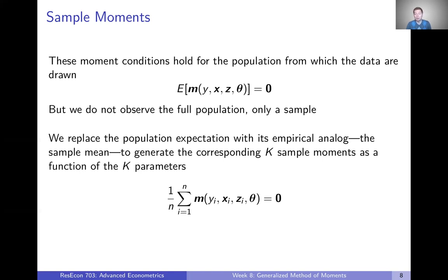We just replace that population expectation with the sample mean. And now we're going to still have k-moments. They're just based on the sample of data that we observe as opposed to thinking about the full population of data from which our sample is drawn.